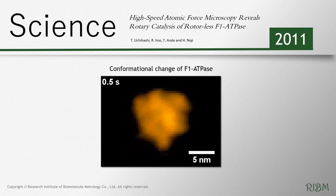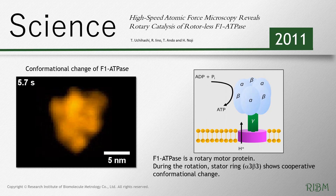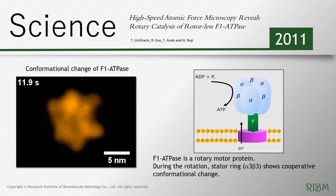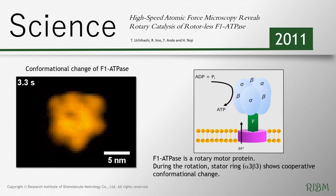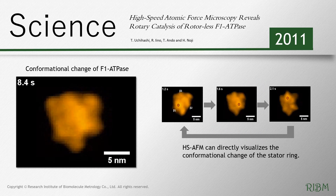The video shows the conformational change of F1 ATPase. F1 ATPase is a rotary motor protein which consists of a rotor subunit and a stator ring. During the rotation, the stator ring shows cooperative conformational change. High-speed AFM can directly visualize the conformational change of the stator ring.